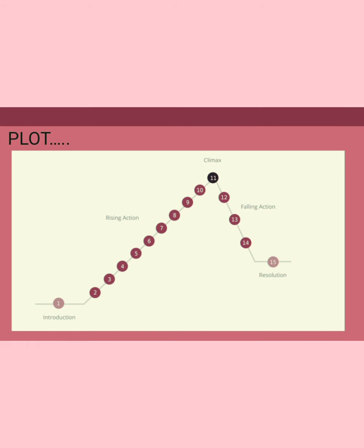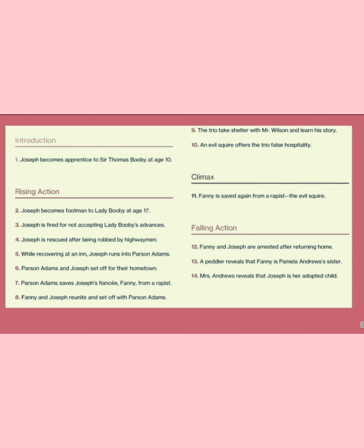So you can see the picture of the plot. There are five basic structural elements of the plot: introduction, rising actions, climax, falling actions, and resolution. It has been structured with numbered points — 1 through 10 leading to the climax at 11, then 12-14 as falling actions, and 15 as the resolution. I will go through each one with the next slide.